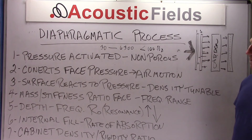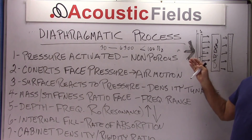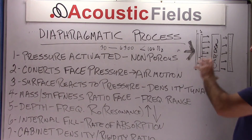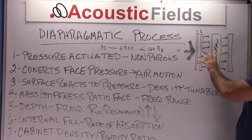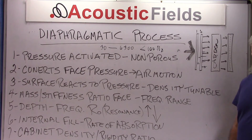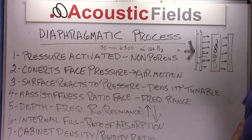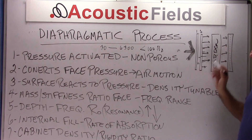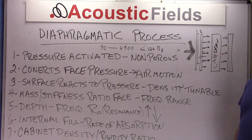So that's the diaphragmatic process: pressure activated, air movement on the inside, proper cabinet construction — and you can get a lot of absorption in a small amount of space if you use the right internal cabinet fill.